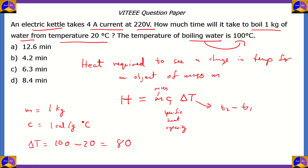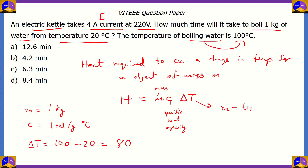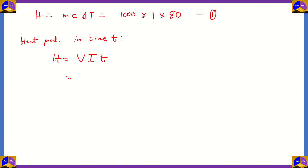Here we're using electricity to produce heat. The formula for heat produced in a time T is V times I times T — voltage times current in amperes times the time taken to heat it up to that particular temperature. We know there are 4 amperes of current and the voltage is 220 volts. So the heat equals 220 times 4 times T. This is the second equation.